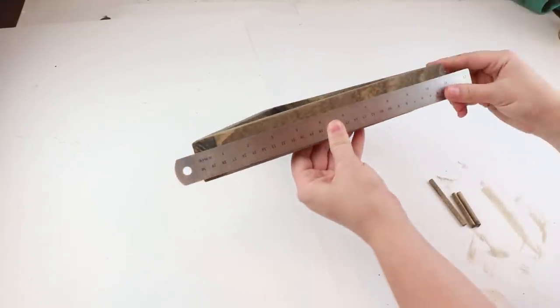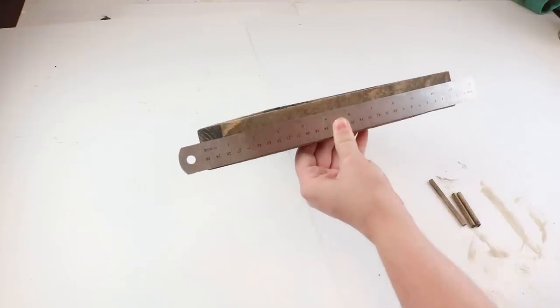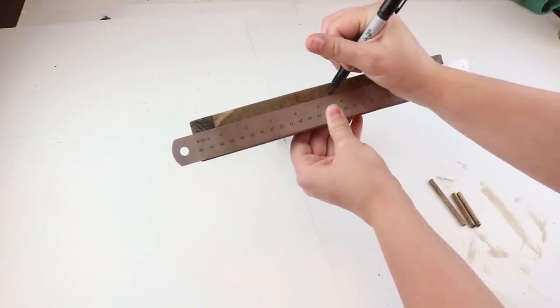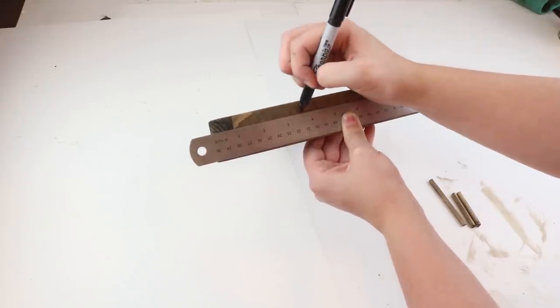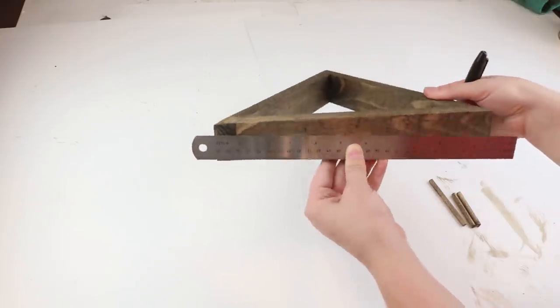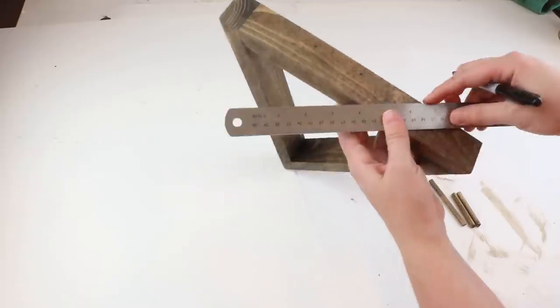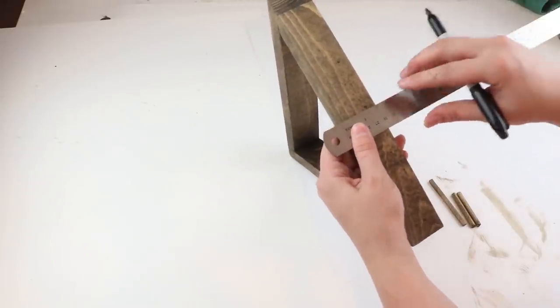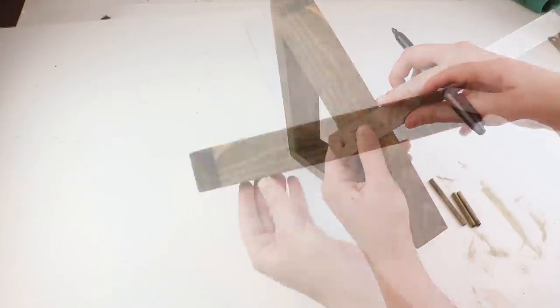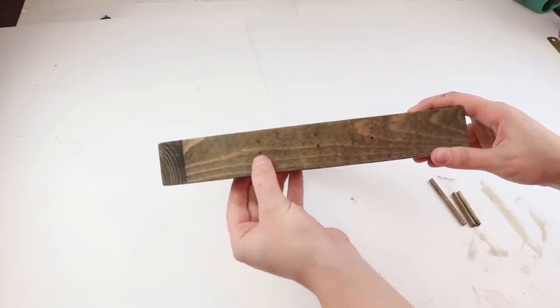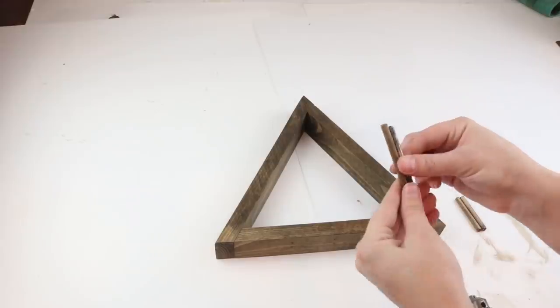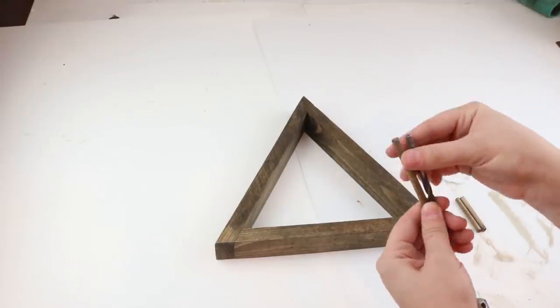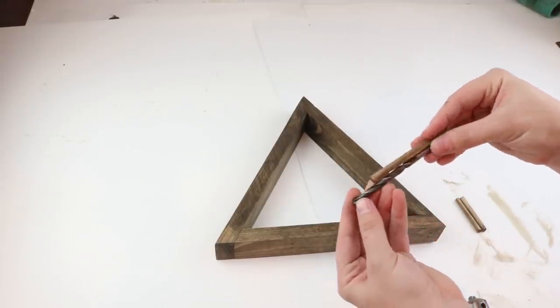I just measured out the middle which is five and a half inches on my piece, just so that I knew where the middle one would go. And then I went over an inch and a half on both sides. That's where the other two smaller dowels will go. You'll want to take a drill and drill these three holes, and make sure you're going straight and not at an angle. The drill bit that you will use is the same size as the dowel.